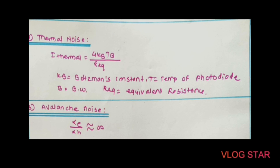The second noise type is thermal noise, created due to changes in the resistance values of the APD. If the resistance of the APD changes, it affects the temperature, generating thermal noise. It is given by: I_thermal = √(4k_B · T · v / R_eq), where k_B is the Boltzmann constant, T is the temperature of the photodiode, v is bandwidth, and R_eq is the equivalent resistance.